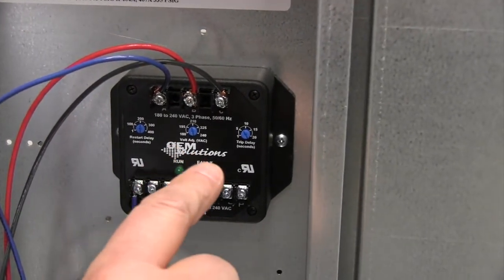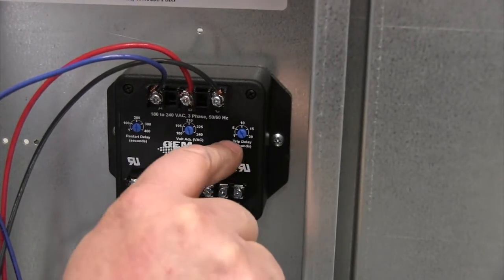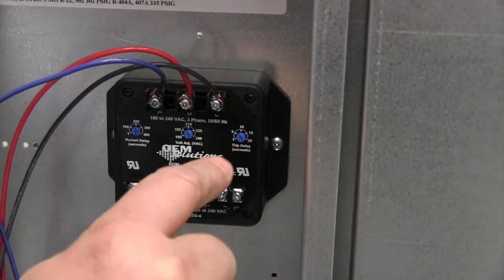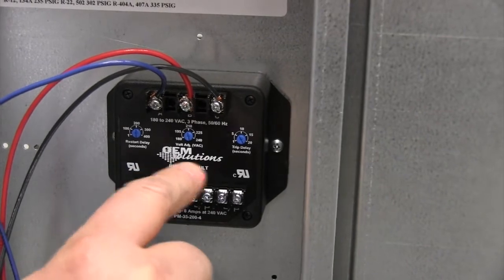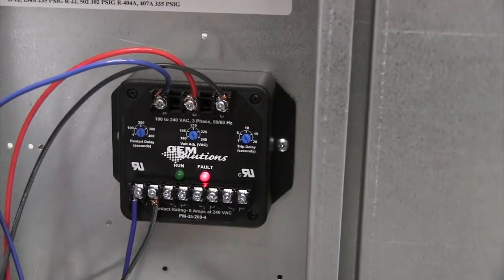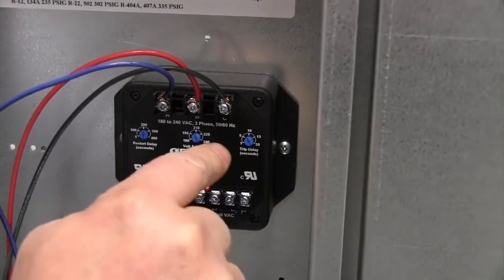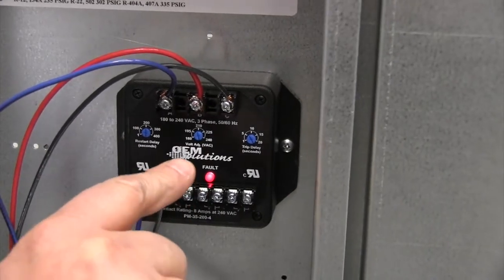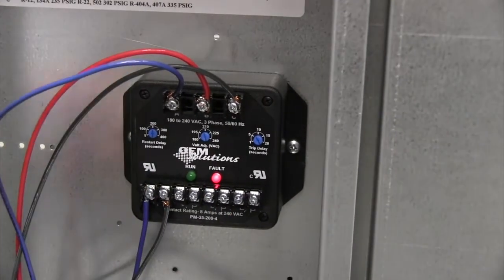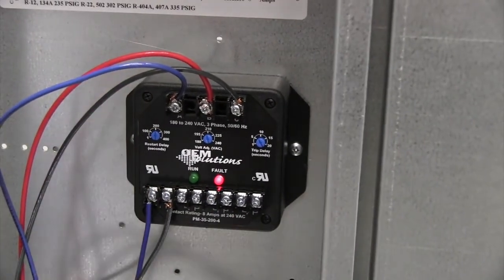The second set point adjustment is your trip delay, which is monitoring the phase voltage between each phase, and if you lose a phase, it's going to wait for the time delay, and then it'll trip off the phase monitor and shut down the unit.